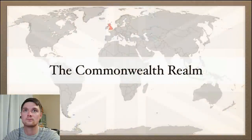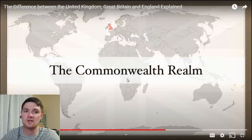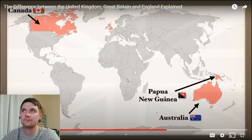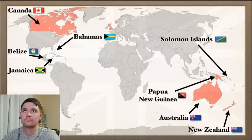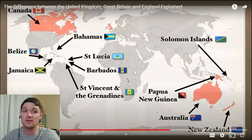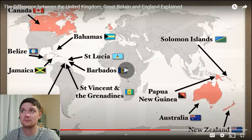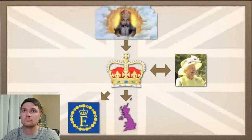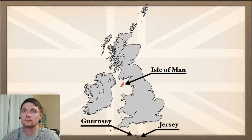Former colonies that gained independence through diplomacy and continue to recognize the authority of the Crown are known as the Commonwealth Realm. They include, in decreasing order of population: Canada, Australia, Papua New Guinea, New Zealand, Jamaica, the Solomon Islands, Belize, the Bahamas, Barbados, Saint Lucia, Saint Vincent and the Grenadines, Antigua and Barbuda, Saint Kitts and Nevis, and Tuvalu. There are also three Crown Dependencies — the Isle of Man, Jersey, and Guernsey — which are granted local autonomy by the Crown.